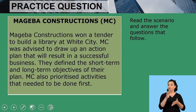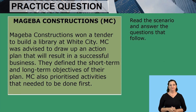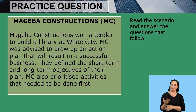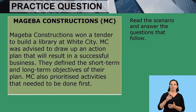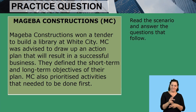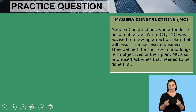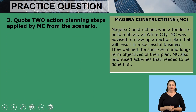Now we have a scenario to read, then we will answer the questions that follow. Makeba Constructions, MC, won a tender to build a library at White City. MC was advised to draw up an action plan that will result in a successful business. They defined the short-term and long-term objectives of their plan. MC also prioritized activities that needed to be done first.